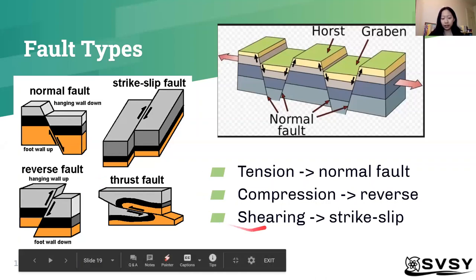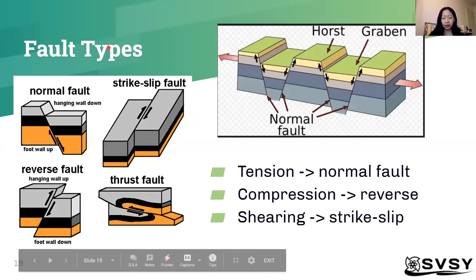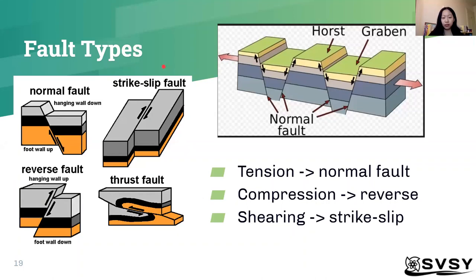The last main type of fault would be the strike-slip fault. That results from a shearing force, which is like a side-by-side force. And if you recall, that is similar to the transform plate boundary, which is why earthquakes were mentioned back there.